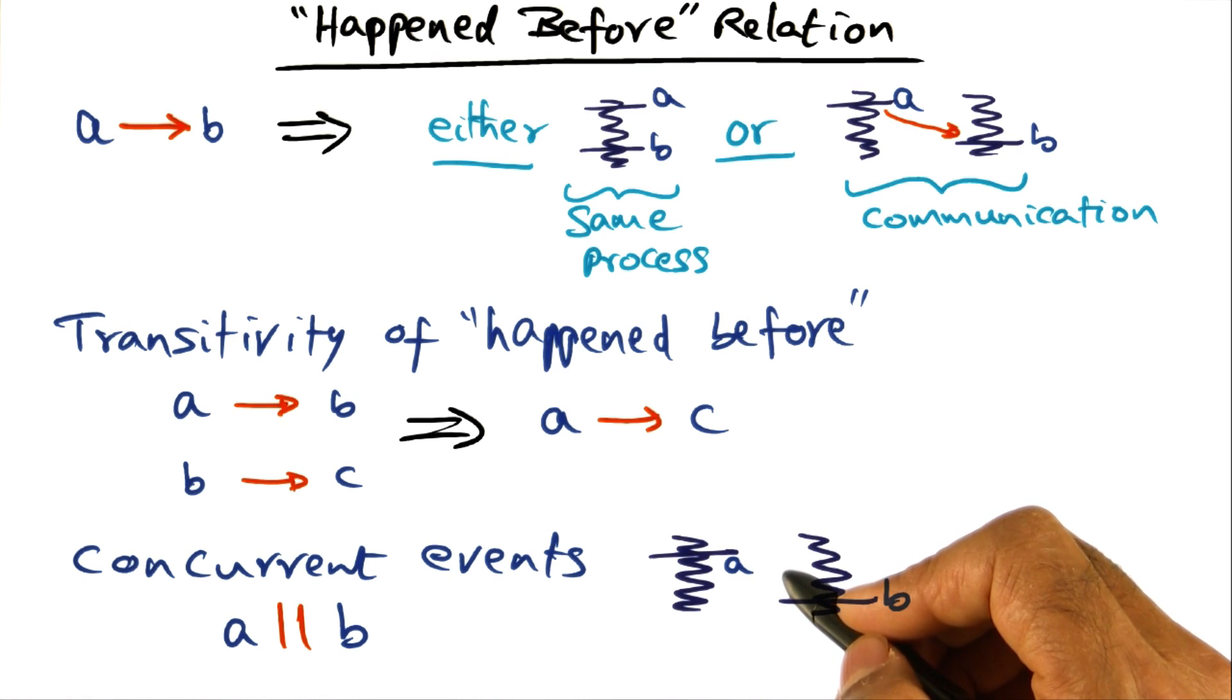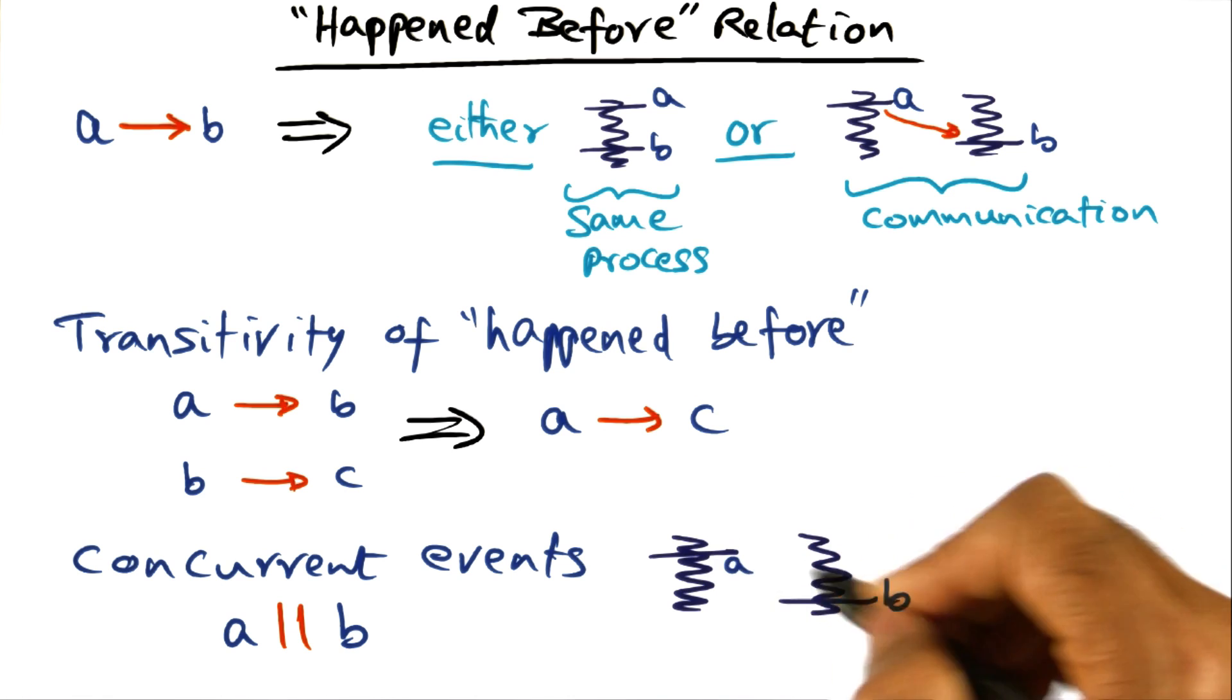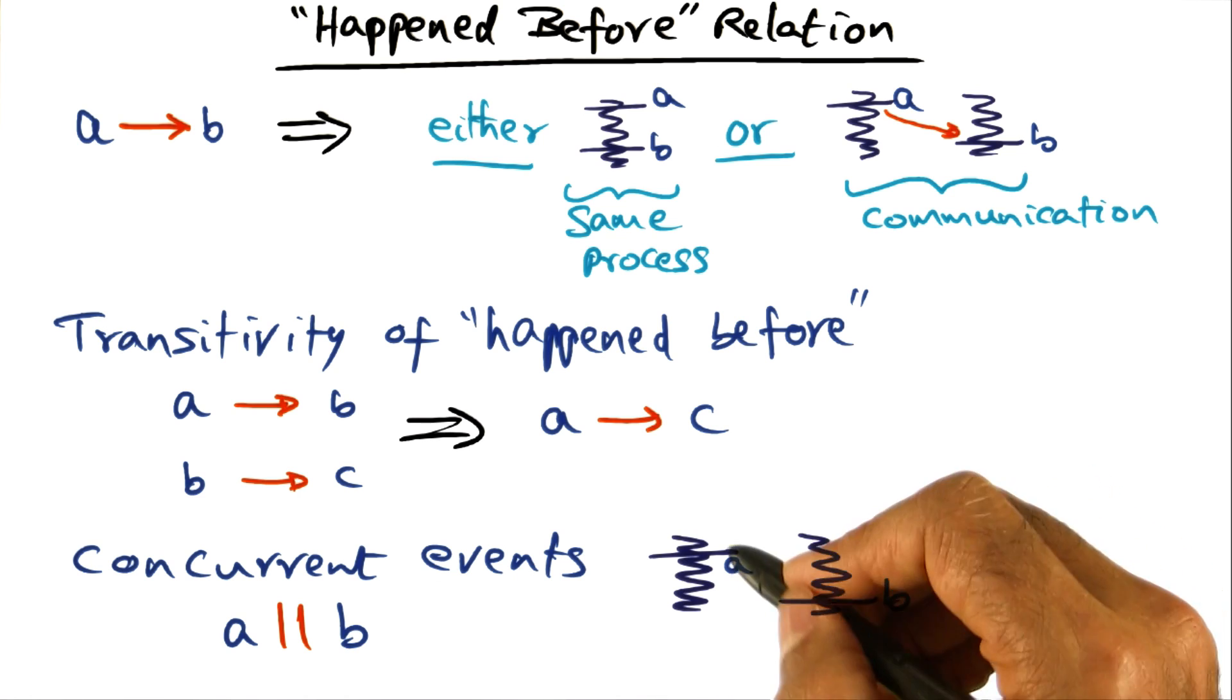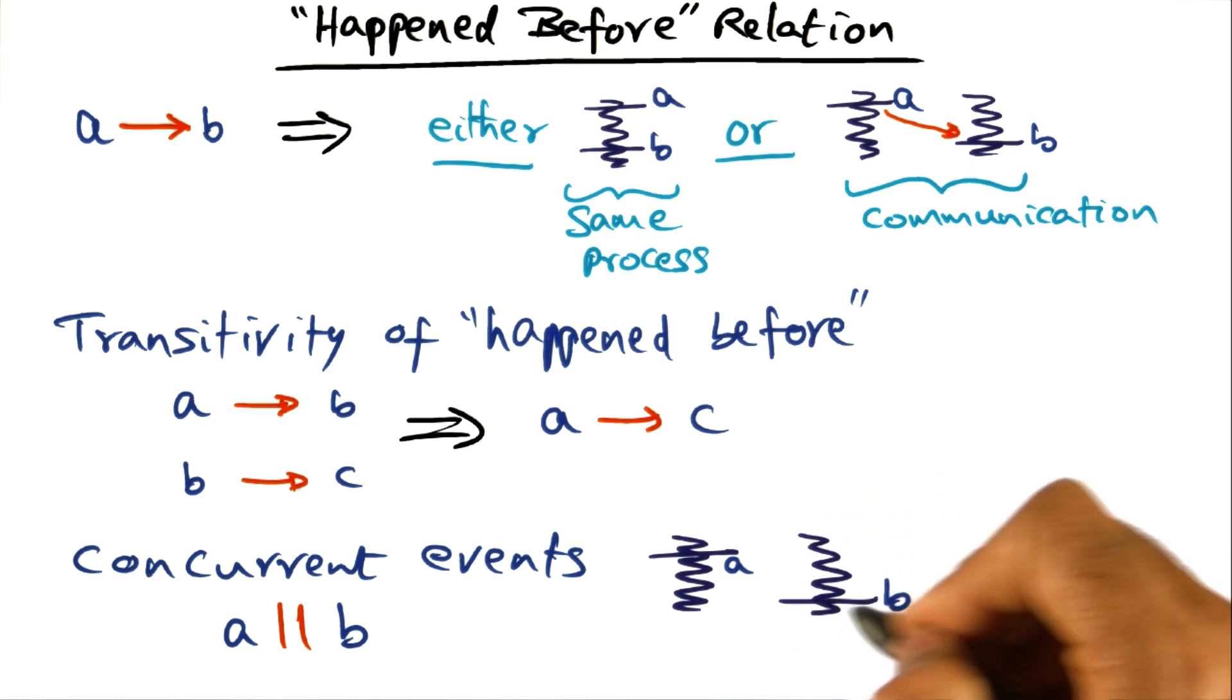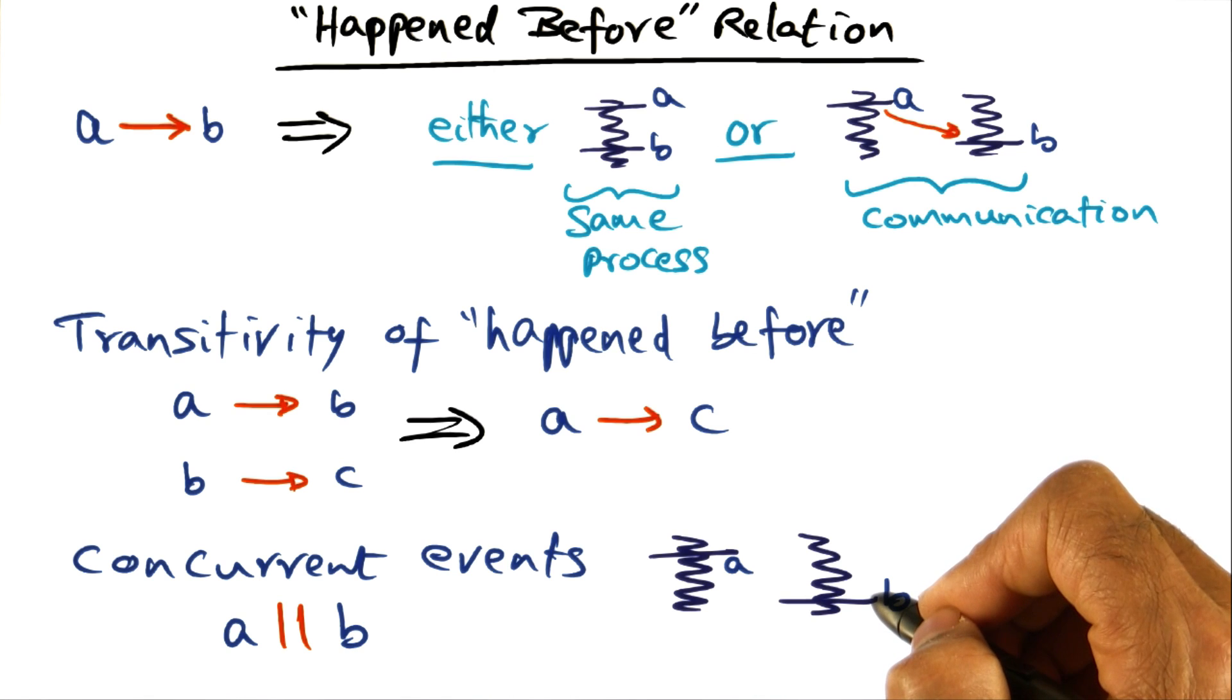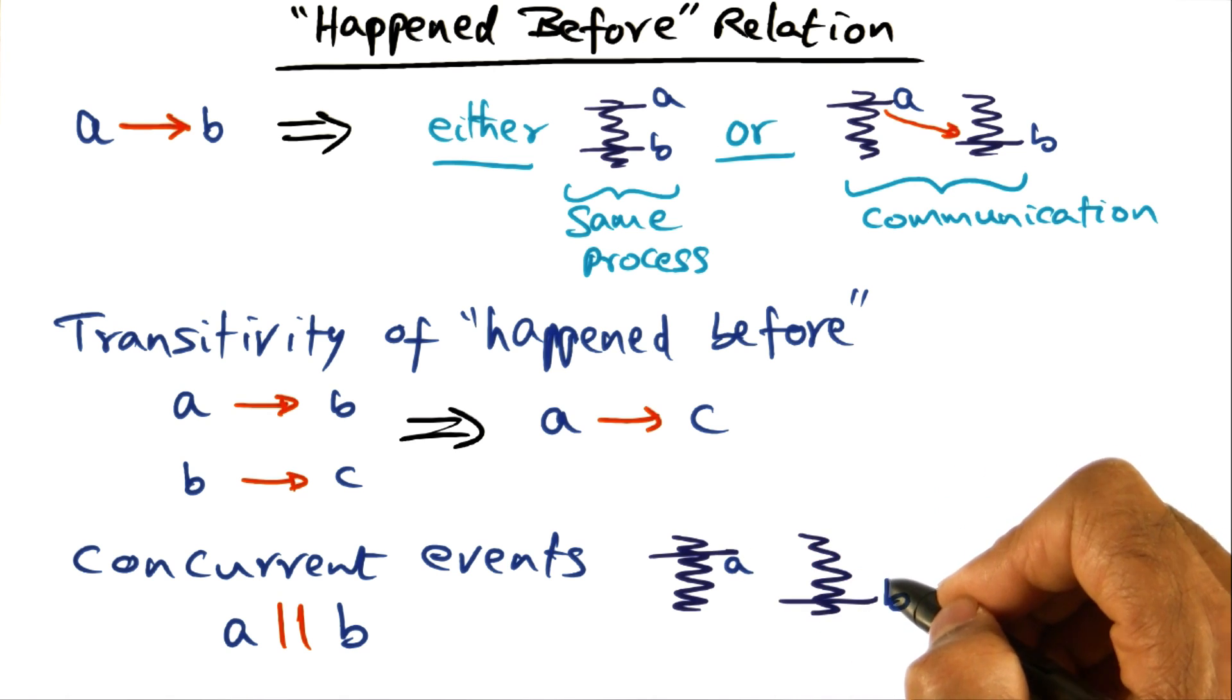Because if you have any assumptions about the ordering of events that are unconnected by communication like this, that can lead to an erroneous program. So one of the bane of distributed programs is synchronization and communication bugs and timing bugs. And this is a classic example of a timing bug that you can have if you mentally think that A happened before B and that's the way you want it to happen. It may not happen because these two events are concurrent events.